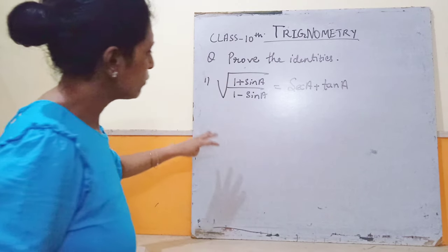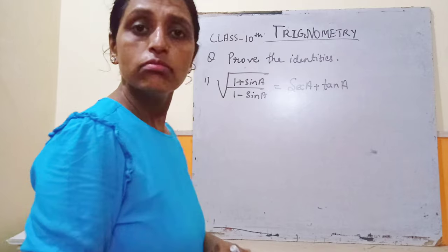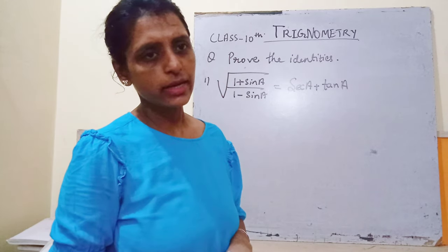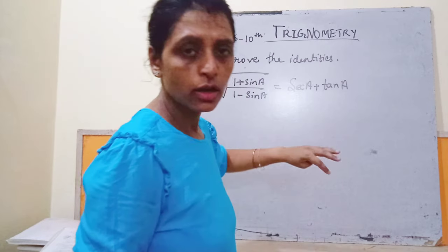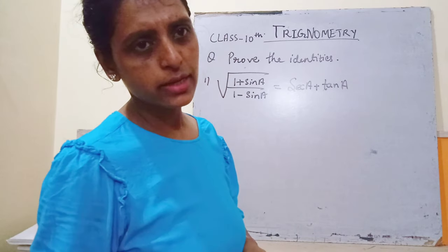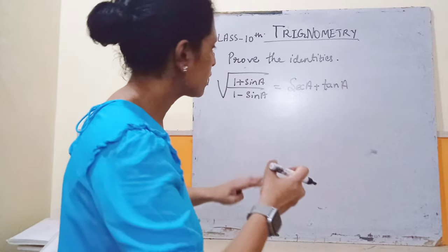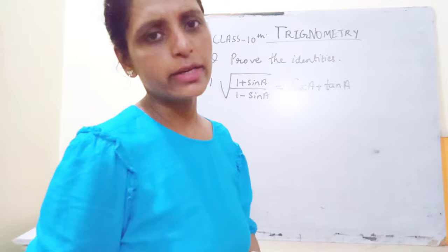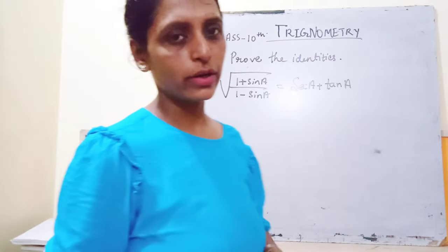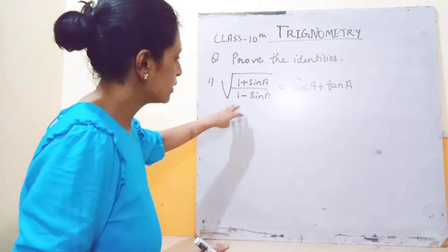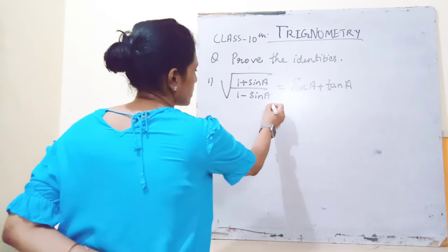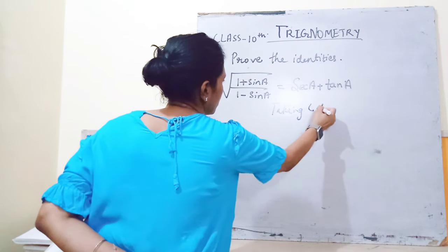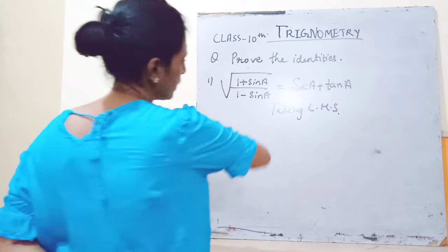Usually when we have to prove any identity, having a left hand side and right hand side, we should take either the left hand side and prove the right hand side, or we can take both hand in hand — left hand side and right hand side — in order to prove it. In this problem, I'm going to start by taking the left hand side.